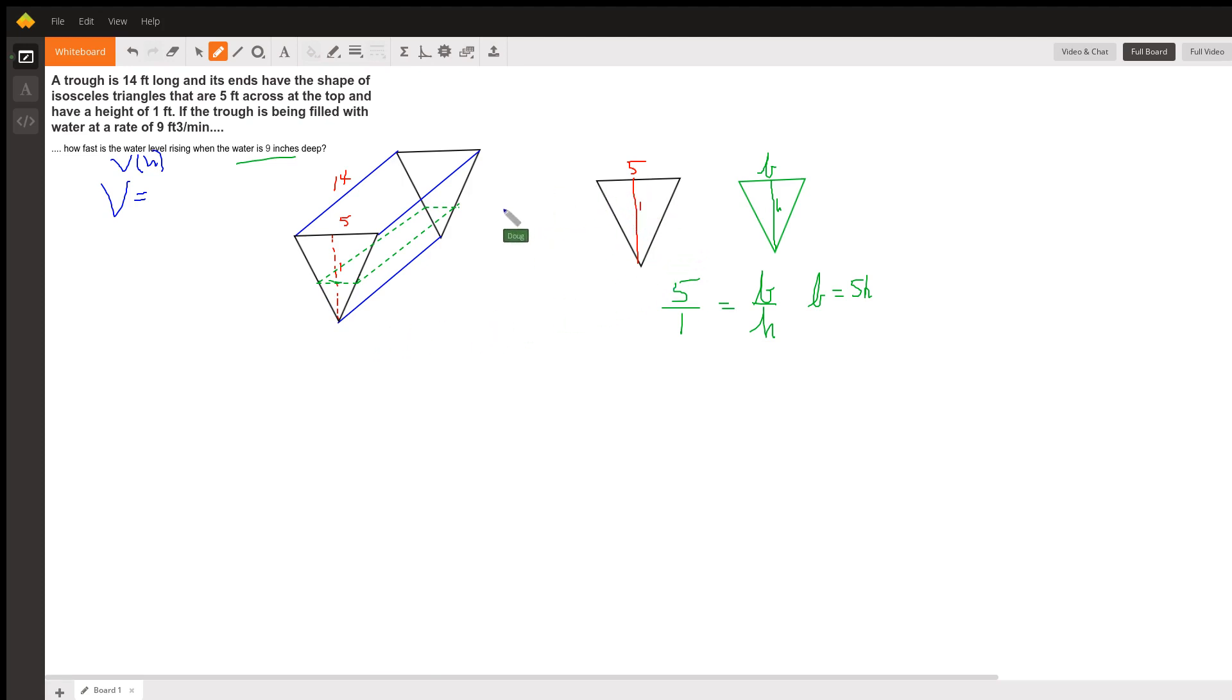So if we picture this base as five by one and this little green isosceles triangle as this triangle right here at a given point in time and we label this distance b and this distance h these triangles must be similar.